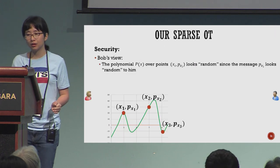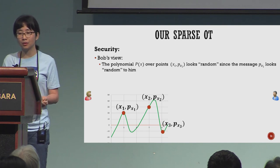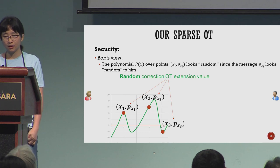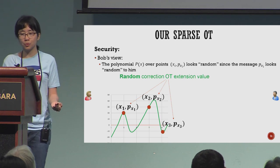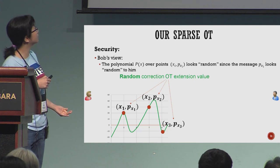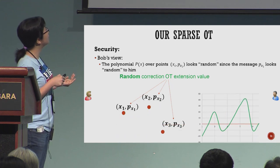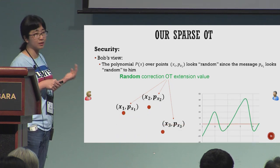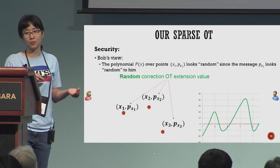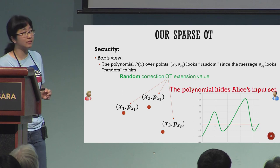For security, the view of Bob is the polynomial over the correction OT values. Alice uses her inputs to interpolate this polynomial, you can see S1, S2, and S3 here. However, because all the Px values are random, this polynomial looks random to Bob, therefore it hides Alice's input set.